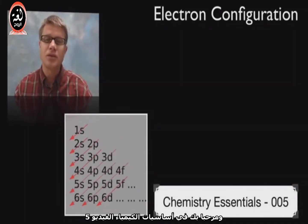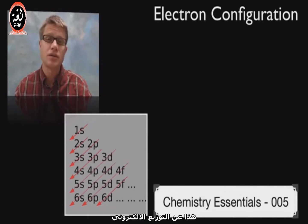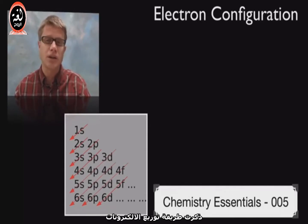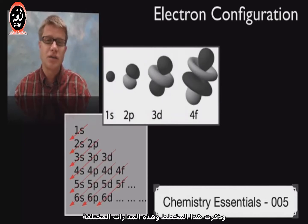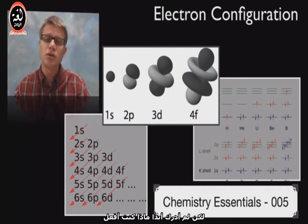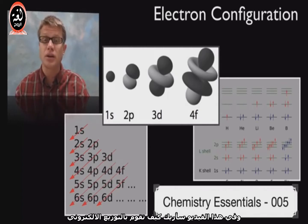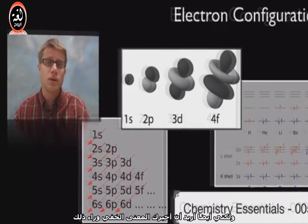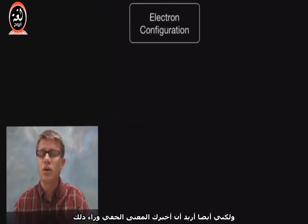Hi, it's Paul Anderson and welcome to Chemistry Essentials video 5, on electron configurations. When I took chemistry I remember having to do electron configurations — this chart, these different orbitals, this diagram. I learned how to do it but never really knew what I was doing. In this video I'm going to show you how to do electron configurations, but I also really want to tell you what's going on behind the scenes.